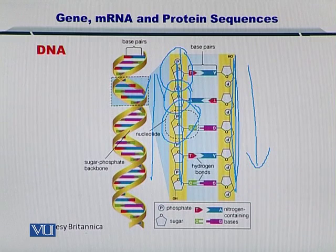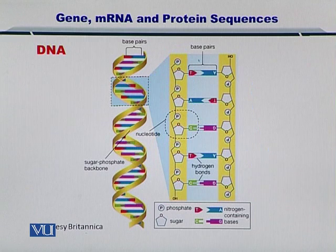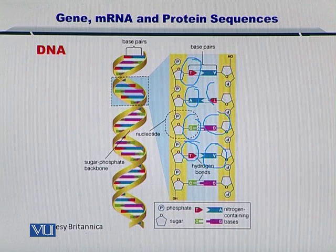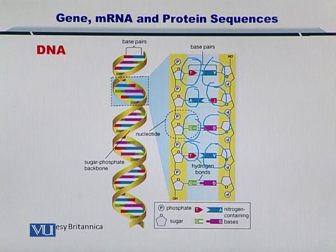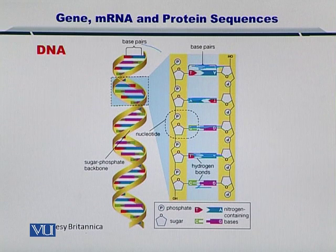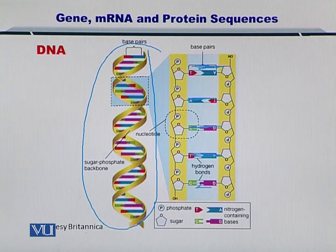The nucleotides T, A, C, T are coupled with their complementary partners. Once these nucleotides come together, they hold the two strands in a helical conformation and you end up with the helical DNA.